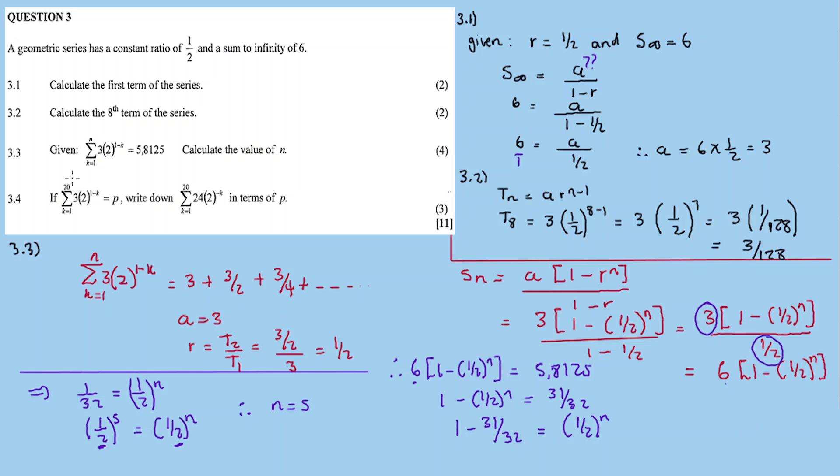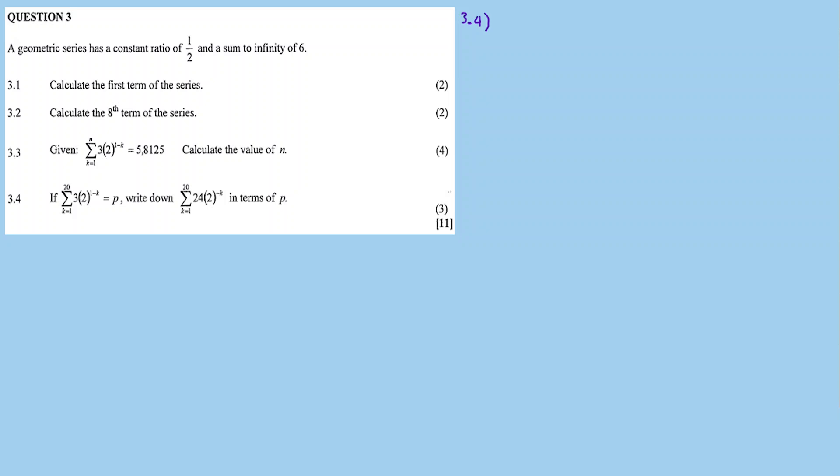3.4. If this sigma, from K equals 1 to 20, of 3 in bracket 2 raised to exponent 1 minus K, equals P, write down the value for the sigma in terms of P. This sigma notation is the same as the previous one, except the upper limit here is 20, and this sigma is equal to P.